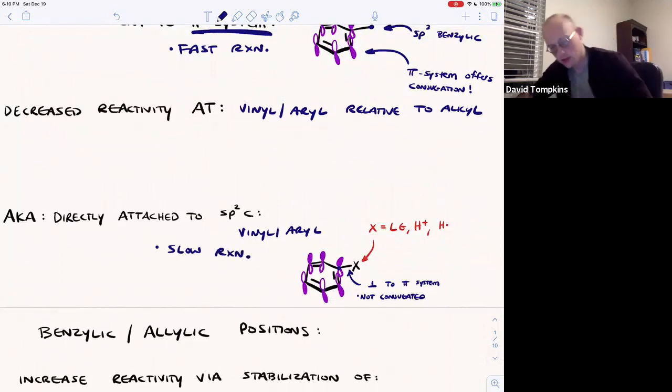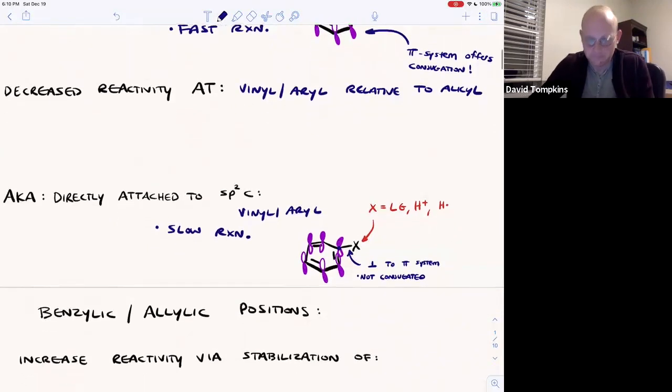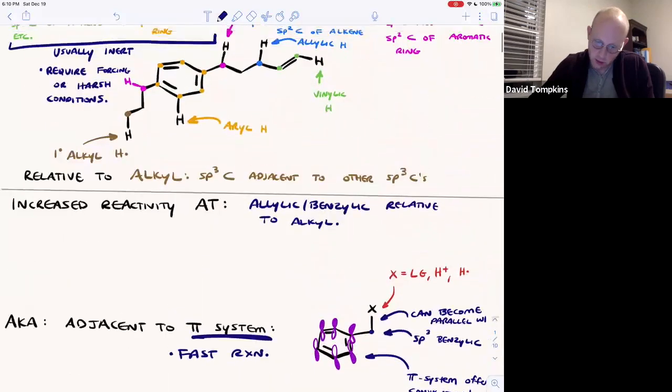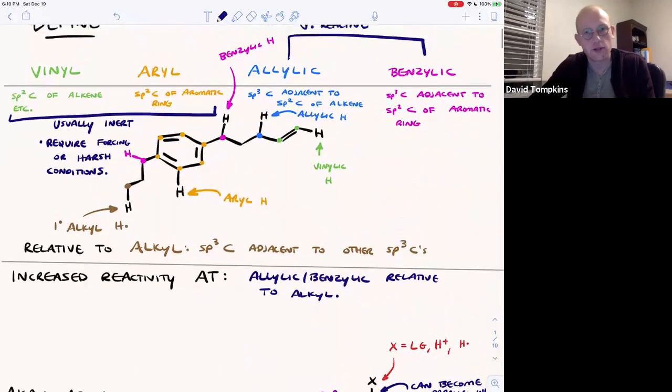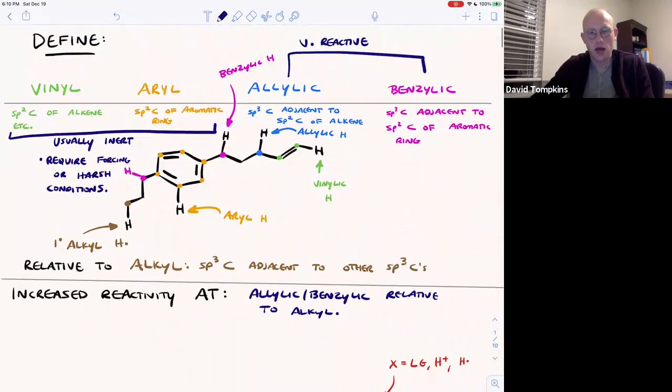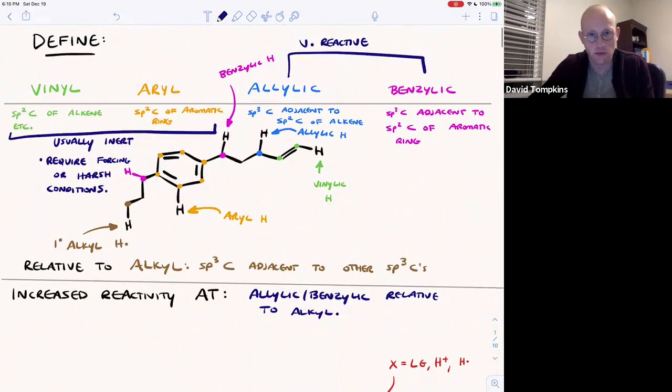And we'll talk about some of those specific cases where we can use forcing conditions to actually get these vinyl hydrogens or vinyl and aryl leaving groups to react. So we'll talk about many of these types of reactions in subsequent videos and discuss exactly why the benzylic and the allylic positions are so damn reactive.